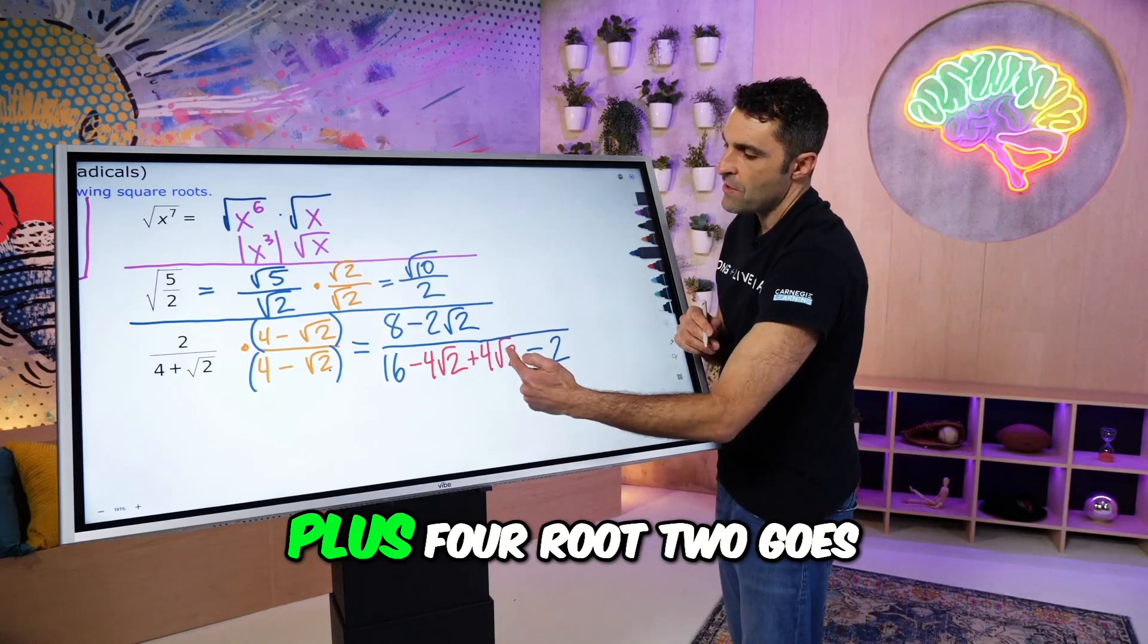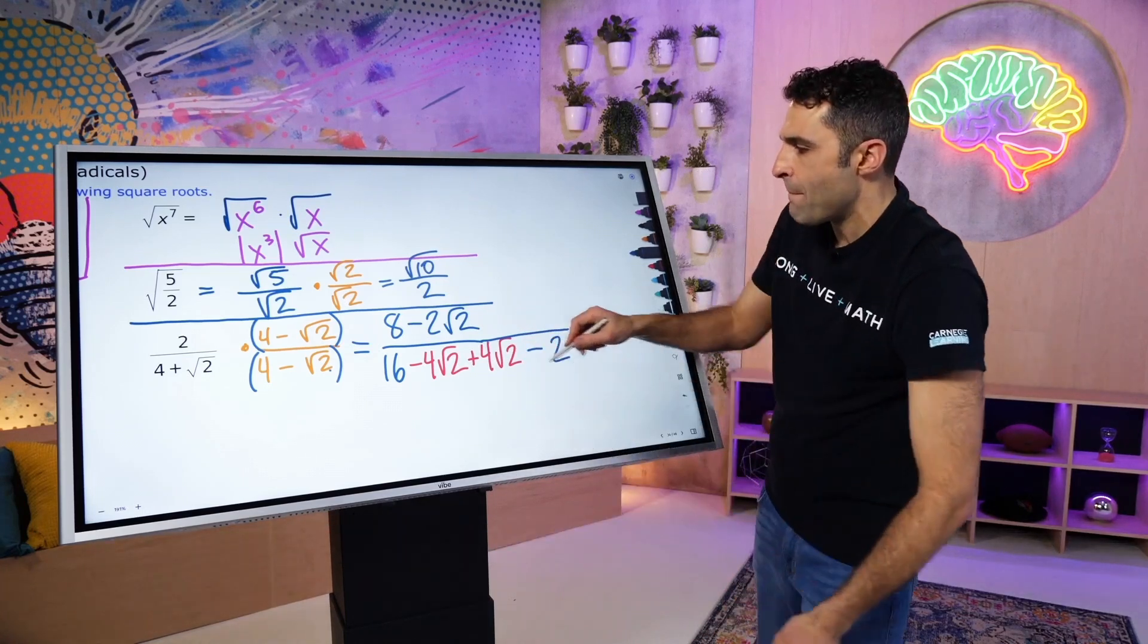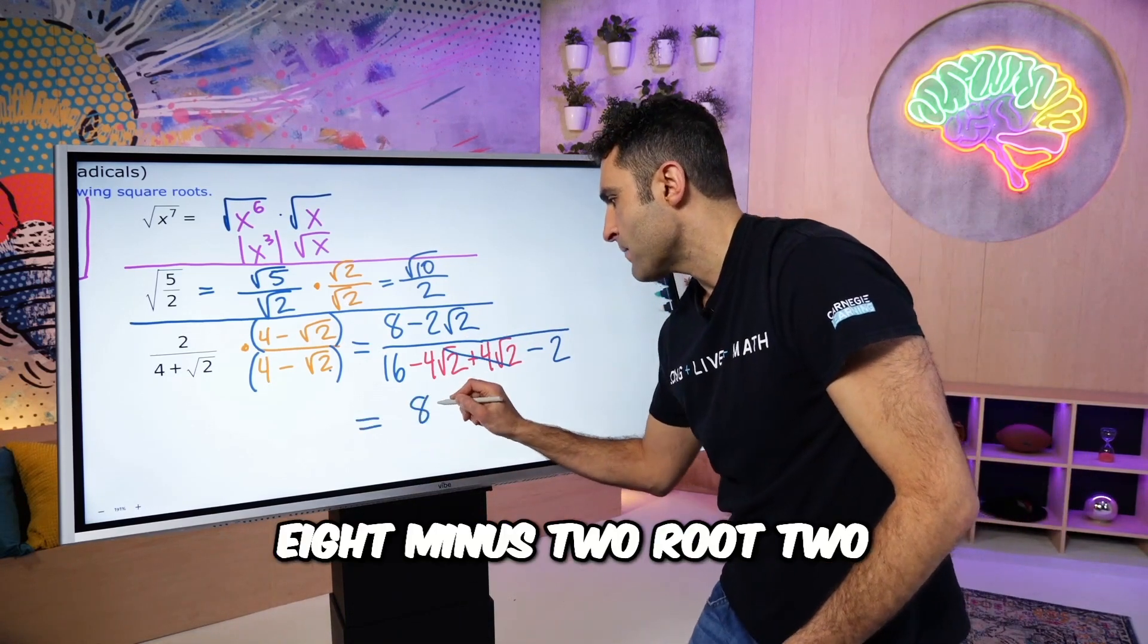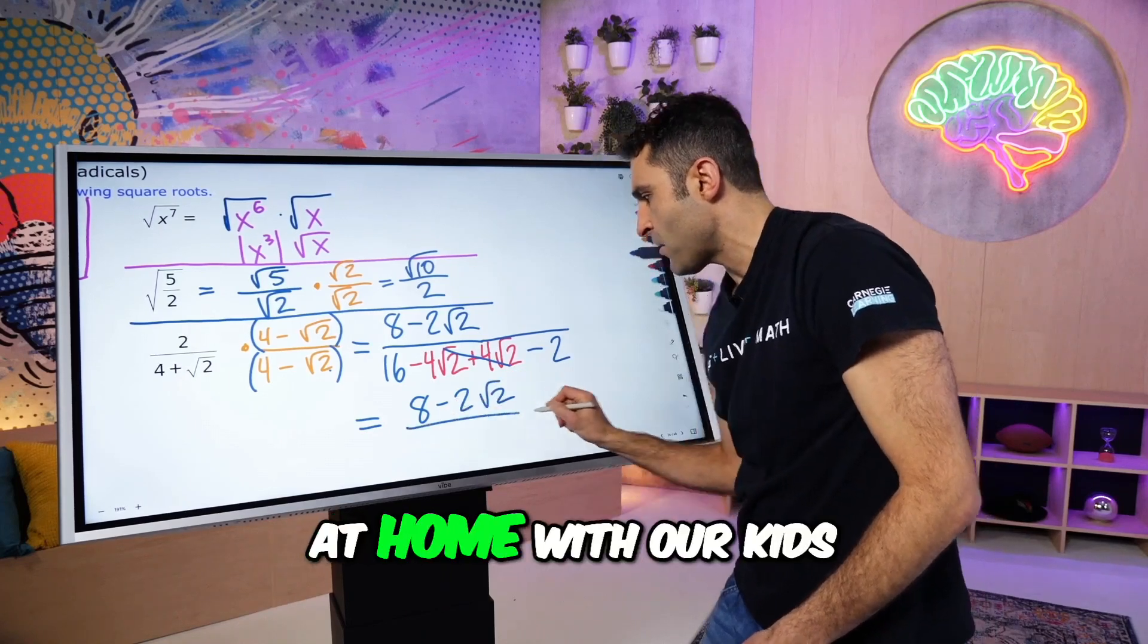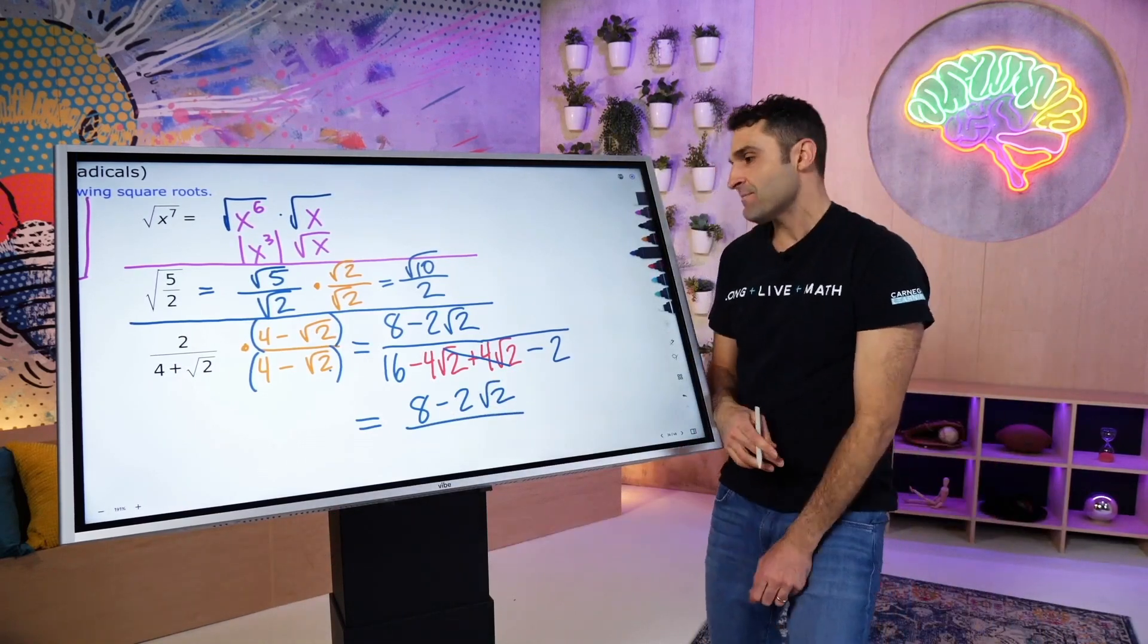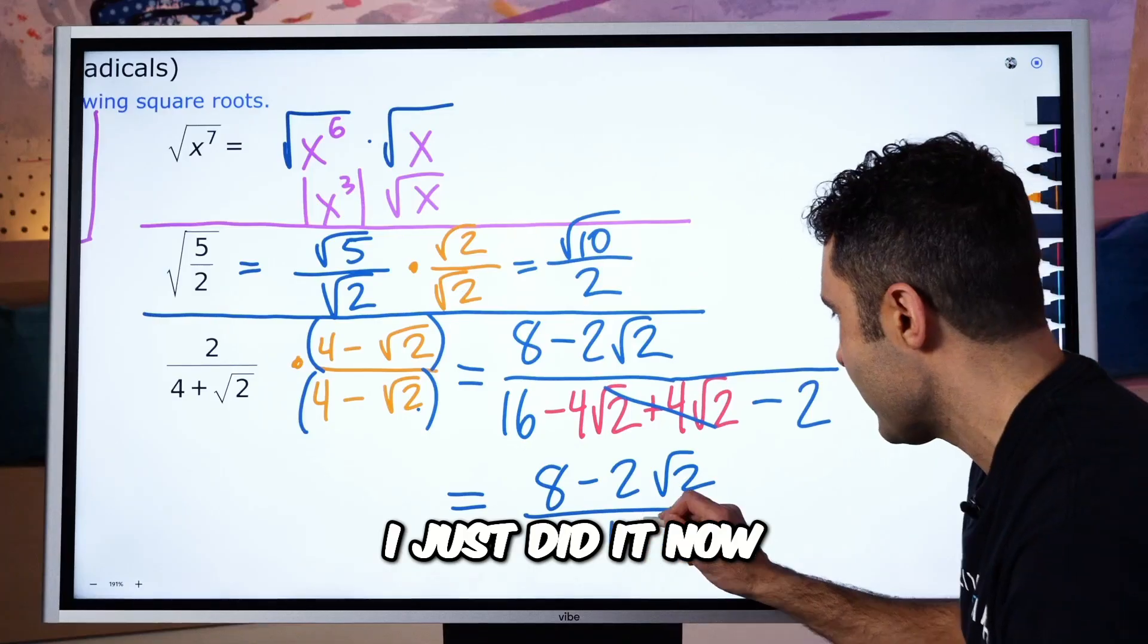Negative 4 root 2 plus 4 root 2 goes to 0. Bye. So we have 8 minus 2 root 2. Little tradition at home with our kids. They're like, bye. I just did it now. Showing you the love.